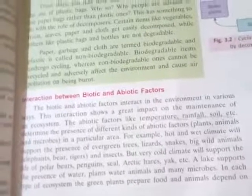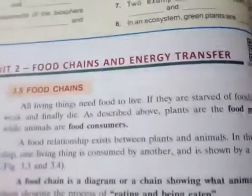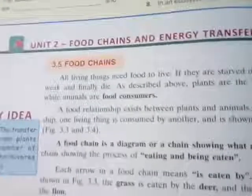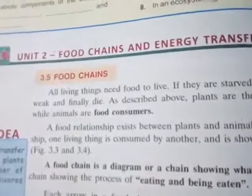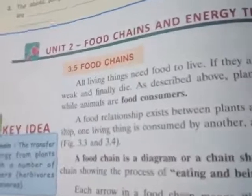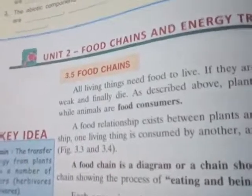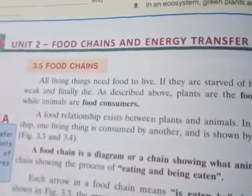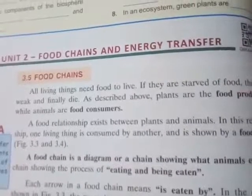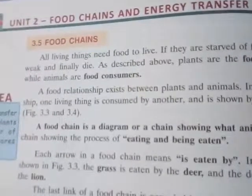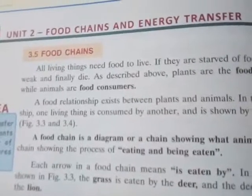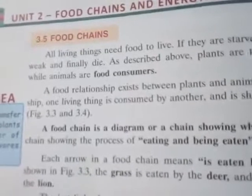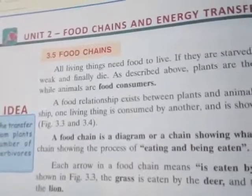The biotic and abiotic factors are correlated to each other. Now I will discuss Unit 2 — food chains and energy transfer — which is a very important topic. Food chain means the relationship between plants and animals. In other words, it is how food is connected between plants and animals, or the transfer of energy from plants to animals or other consumers.